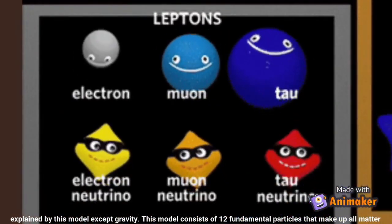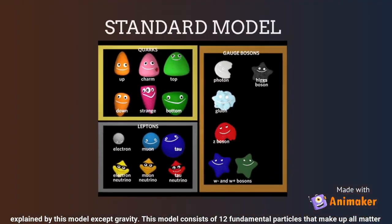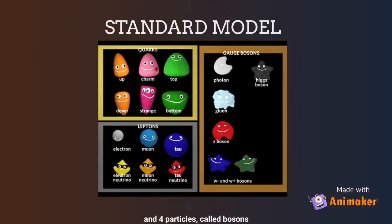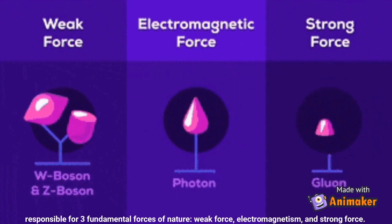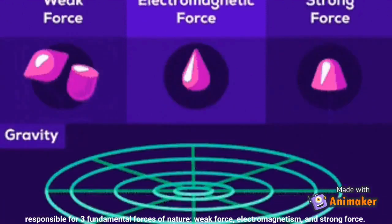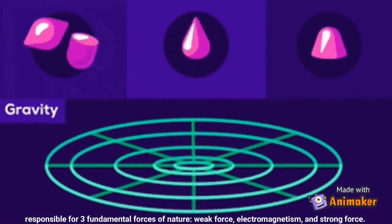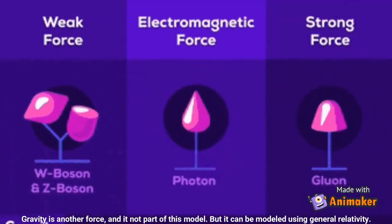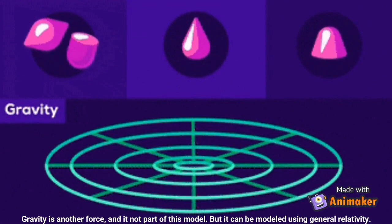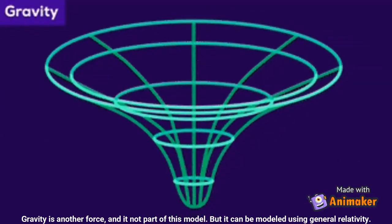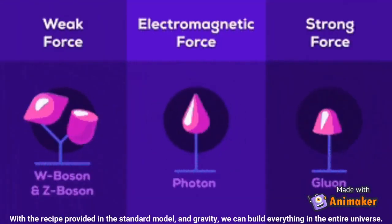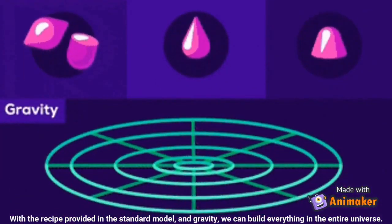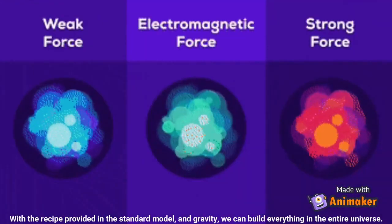Nearly all phenomena and the underlying particles that make up the ultimate building blocks of the universe can be explained by this model, except gravity. This model consists of 12 fundamental particles that make up all matter, and 4 particles called bosons responsible for 3 fundamental forces of nature: weak force, electromagnetism, and strong force. Gravity is another force and is not part of this model, but it can be modeled using general relativity. With the recipe provided in the Standard Model and gravity, we can build everything in the entire universe.